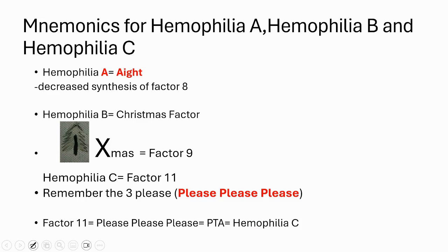To summarize hemophilia: hemophilia A is decreased synthesis of factor 8, hemophilia B is decreased synthesis of factor 9, and hemophilia C is decreased synthesis of factor 11.